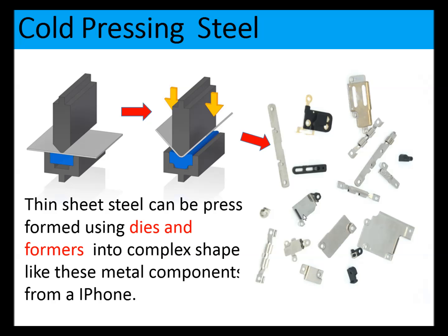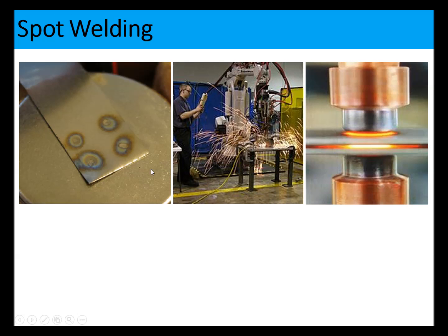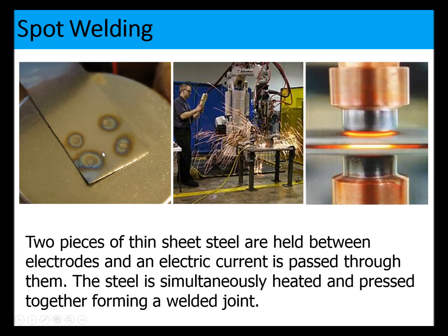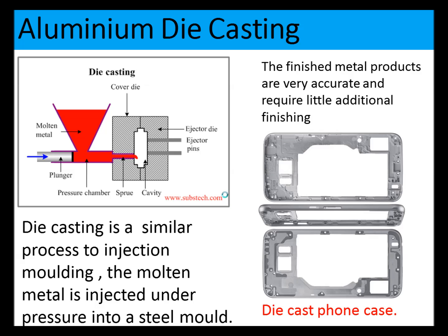Thin sheet steel can be cold pressed using forming dies and formers. iPhone components made of thin steel or aluminium are shaped by placing them between two formers with a force applied. For spot welding, two pieces of thin sheet steel are held between electrodes, a current is passed through them, and the steel is simultaneously heated and pressed together forming a welded joint.